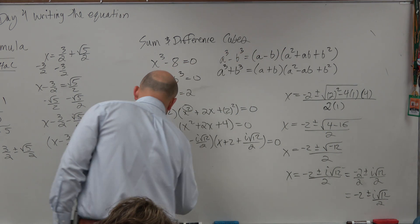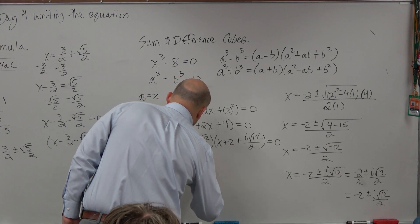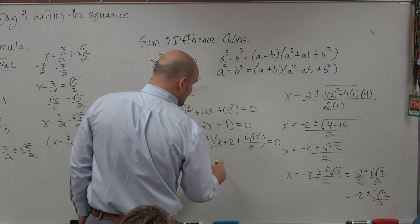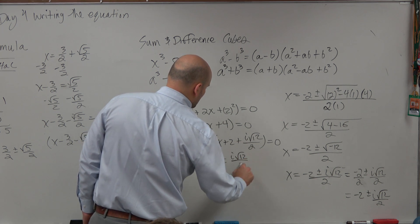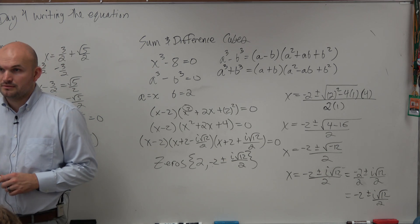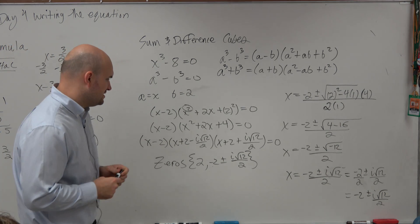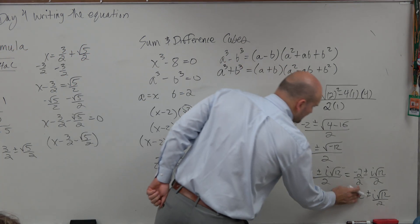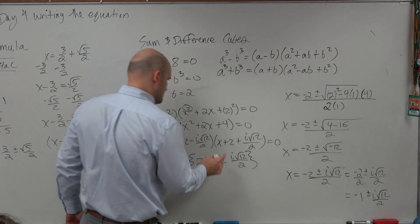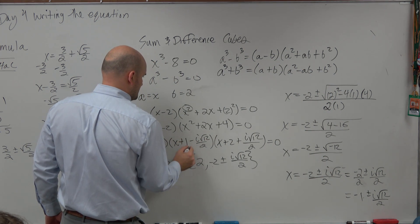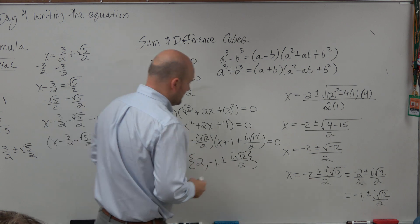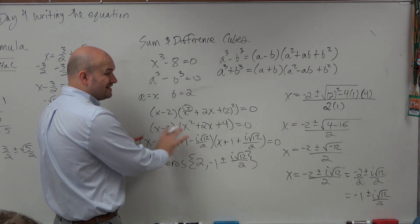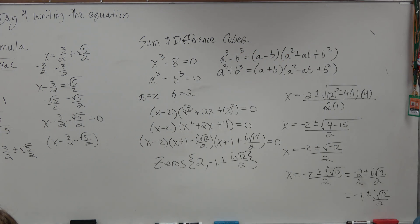So therefore, the zeros are 2 and negative 2 plus or minus i square root of 12 over 2. Negative 2 divided by 2 is negative 1. Yes, it is negative 1. I just didn't simplify it, did I? Thank you. So therefore, that's how you write it in linear factorization, and that's how you'd write it in as the zeros.